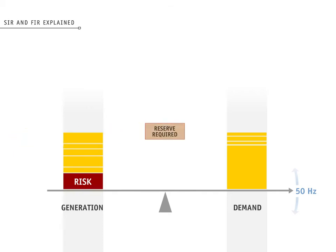We group the scheduled reserves into two categories: fast instantaneous reserve, or FIR, and sustained instantaneous reserve, or SIR. Each serves a purpose, as we'll see later.